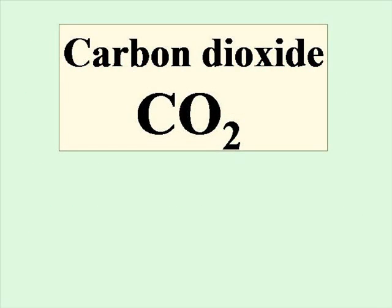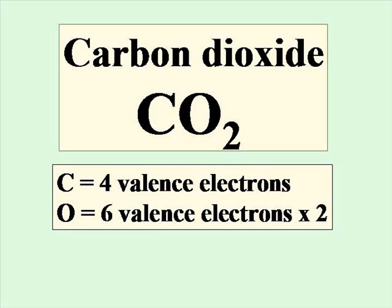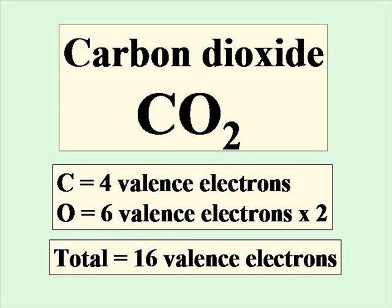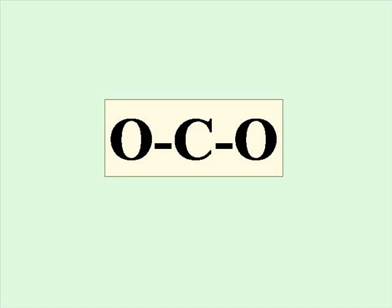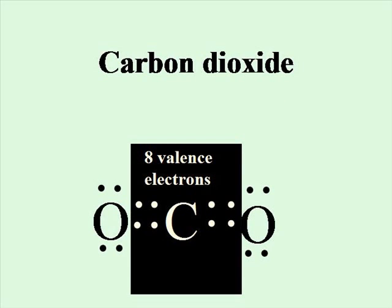Let's look at an example where you have to have multiple bonds in order to obey the octet rules. Carbon has four valence electrons, and each oxygen brings six, giving a total of 16 electrons to work with. As you place the central atom and the two oxygens beside it and bond them, you start to arrange the remaining valence electrons. No matter how you try, you will never be able to get eight electrons around each carbon and each oxygen using single bonds, and you'll end up using more than the 16 available valence electrons.